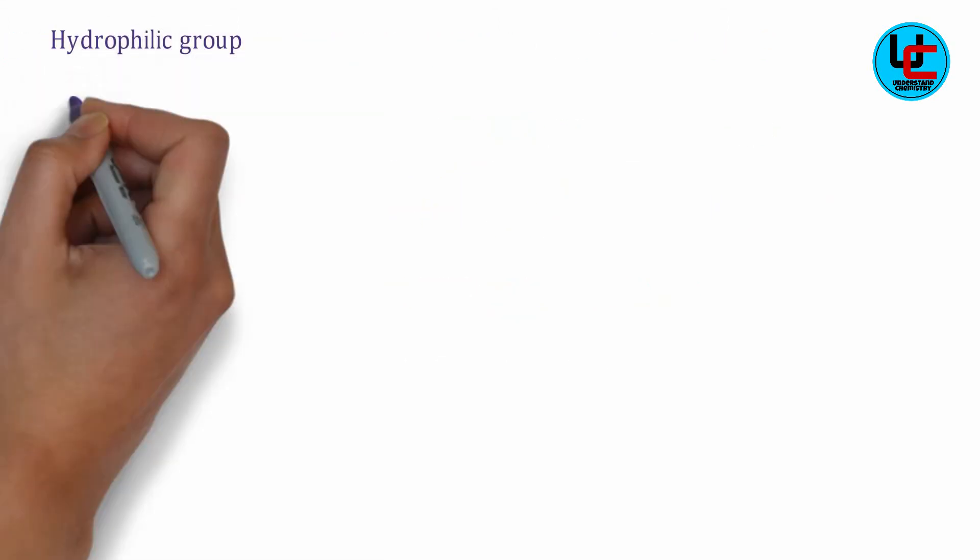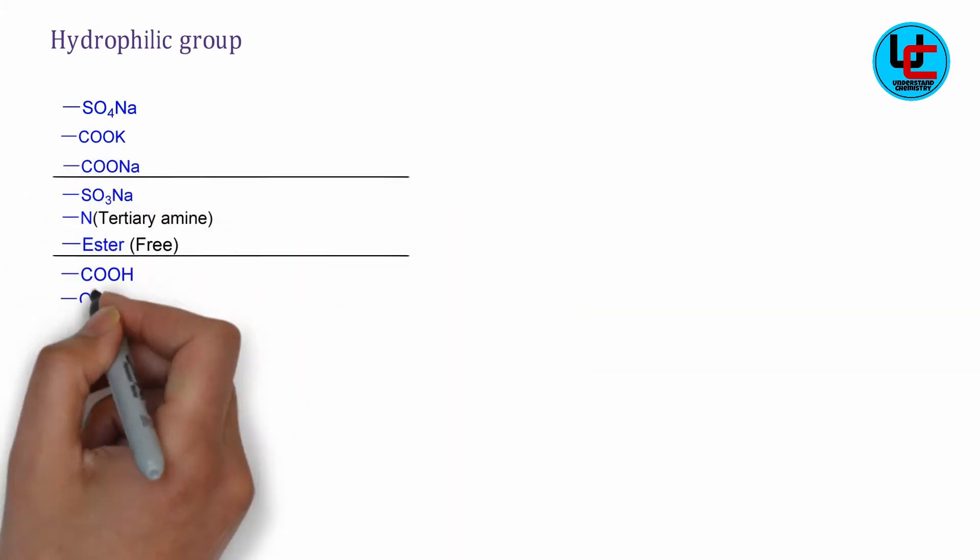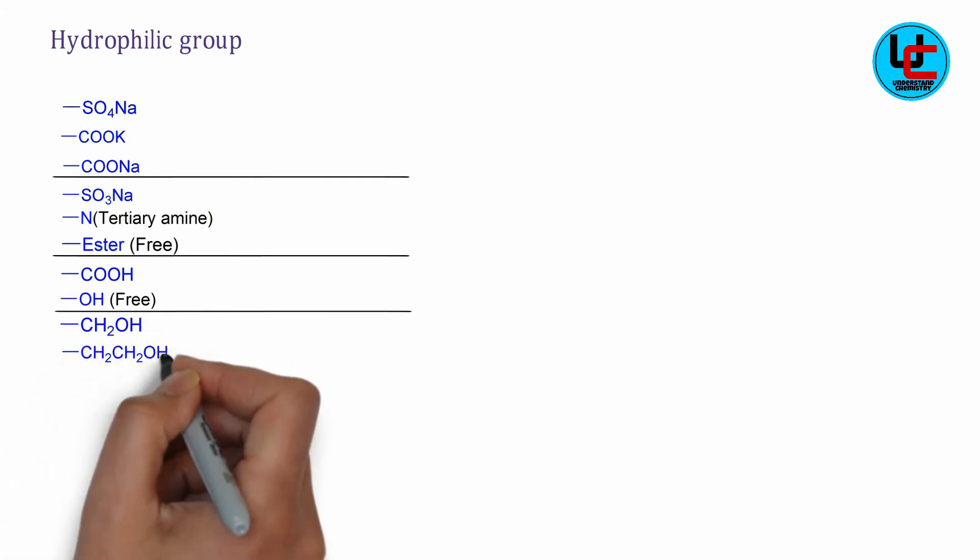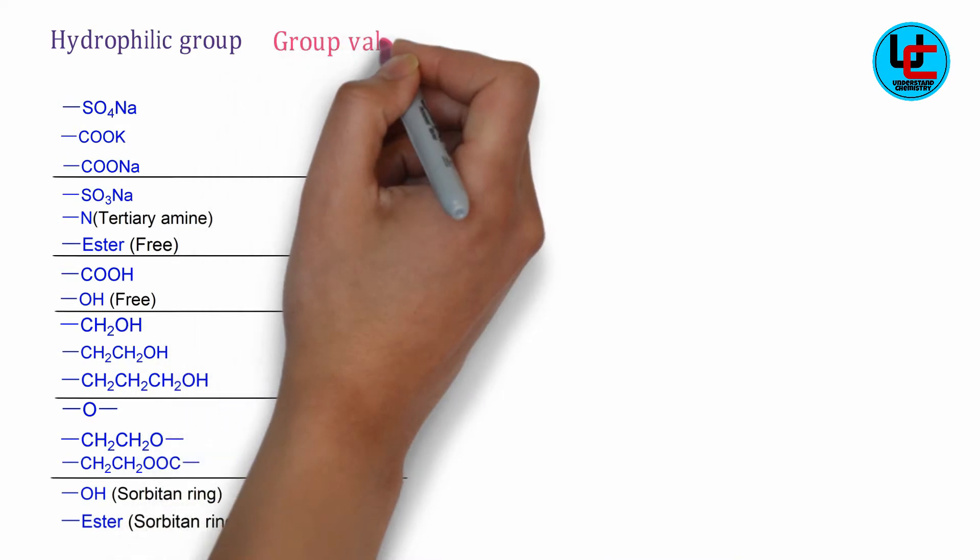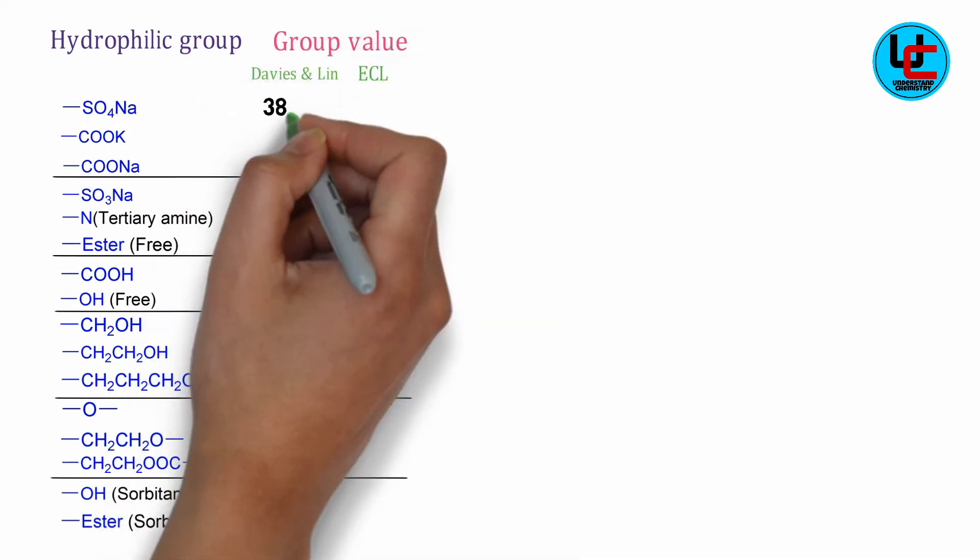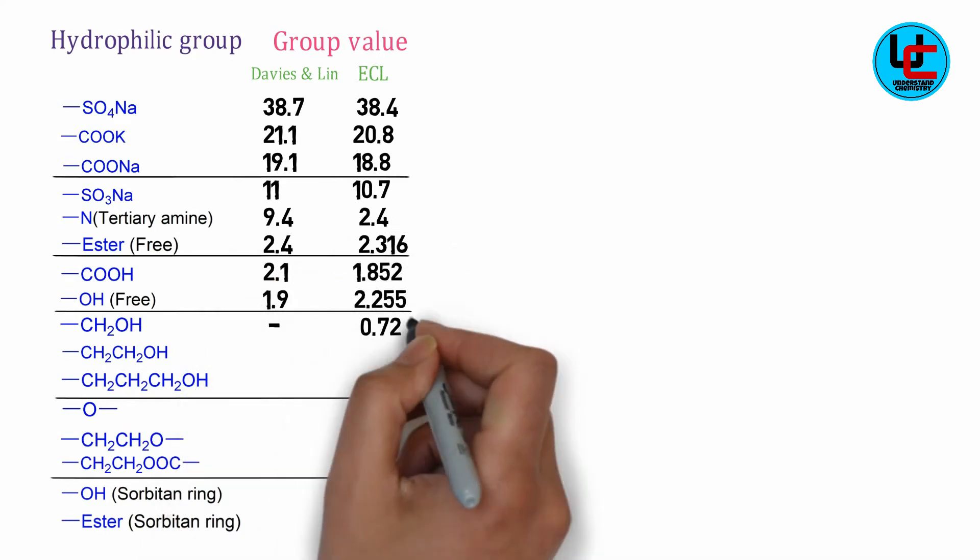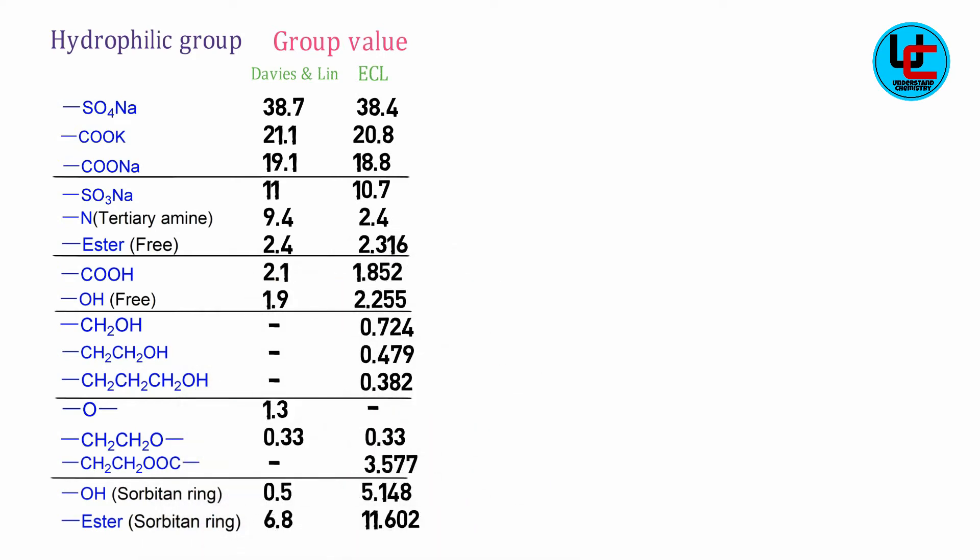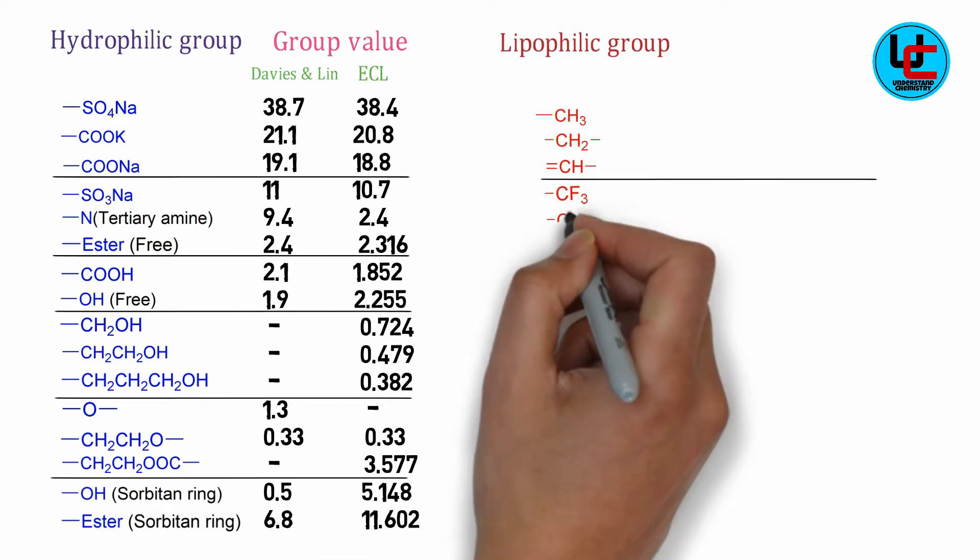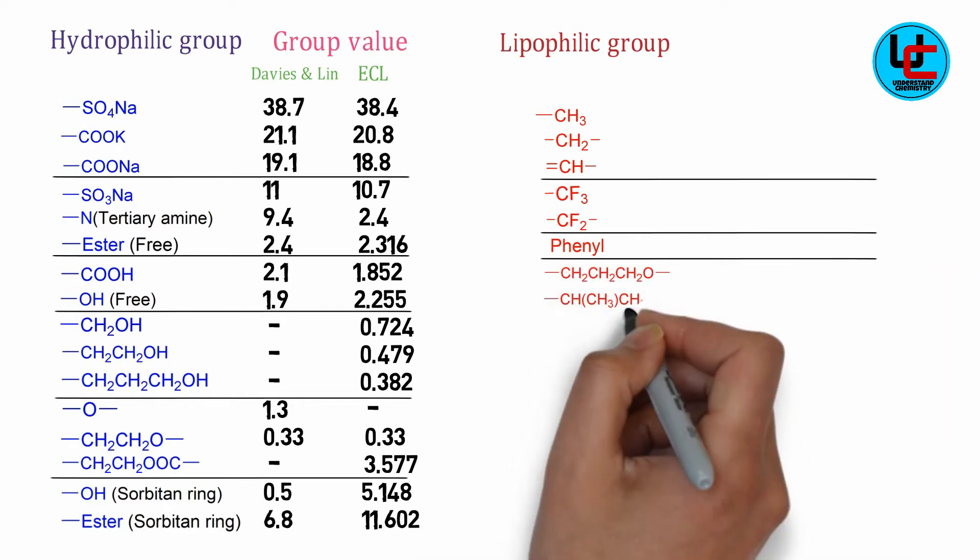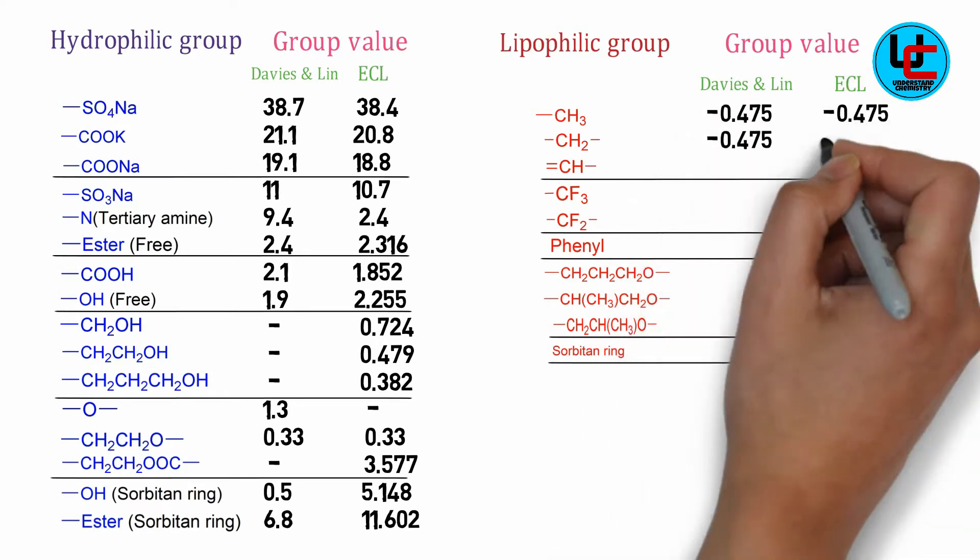In the following table you can see group values of several hydrophilic and lipophilic groups. There are two columns for the values: one column shows the group values according to Davies and Linz method, beside this you can also see a column with group values estimated by ECL method or effective chain length method.